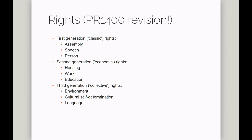In that module we reviewed different generations of rights. First generation or classic rights involve the rights to free assembly, freedom of speech, and freedom of the person — protection against arbitrary imprisonment, sometimes referred to as the right to habeas corpus. Second generation rights are economic rights: rights to housing, work, and education. Third generation rights are rights exercised by collectives rather than individuals — a broad collective right to a decent environment, or more specific rights to cultural self-determination, language use, or rights enjoyed only by specific cultural or linguistic groups.